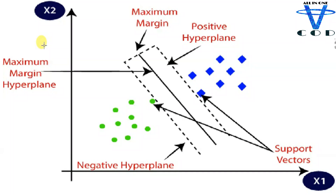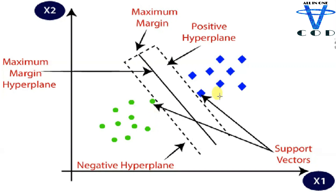You can see the structure of SVM. We have x1 and x2 axes and we have the data — circle data and square data. To separate the square and the circle data, we create a line. This is not a linear regression line; it is called the hyperplane in SVM. This is how we separate our data.